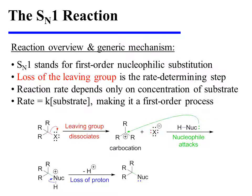SN1 stands for first-order nucleophilic substitution. Loss of the leaving group is the rate-determining step of this reaction. During that step, only one species is mechanistically involved, and that is the substrate. Therefore, the rate depends only on the concentration of the substrate, making this a first-order process.